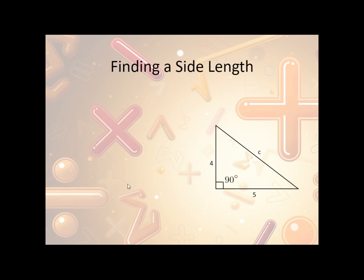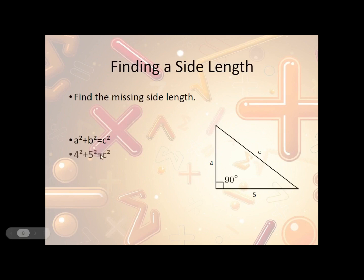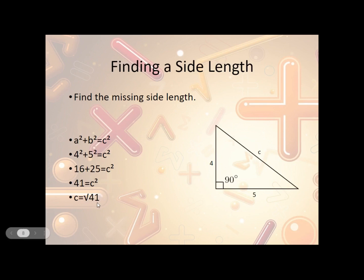Let's look at another example. We have 4 and 5 and we need to find the hypotenuse. So A squared plus B squared equals C squared. We plug in 4 for A and 5 for B: 4 squared plus 5 squared equals C squared. 4 squared is 16 and 5 squared is 25. 16 plus 25 is 41. There is no perfect square root of 41, so C is the square root of 41, or approximately 6.40 by rounding.